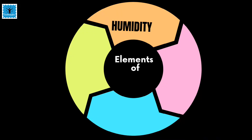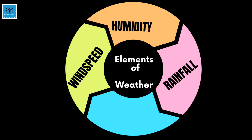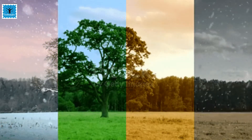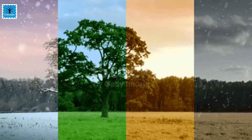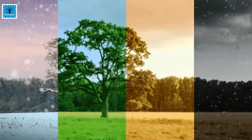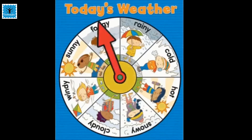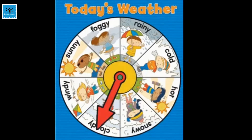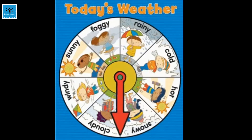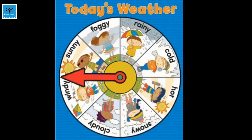Humidity, rainfall, temperature, wind speed, and other factors are called the elements of weather. Weather of a place changes day by day or week after week — that's why we often say things like 'today's weather is too humid' or 'the weather was warm last week.'